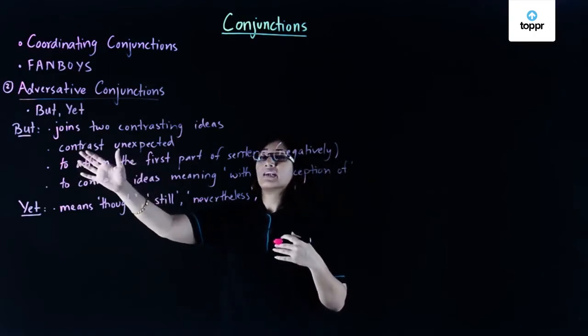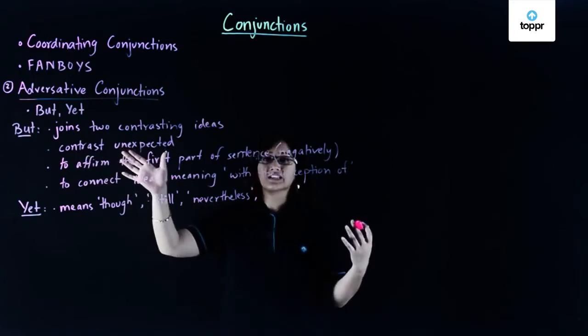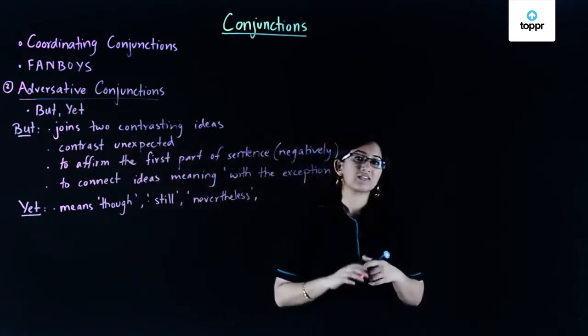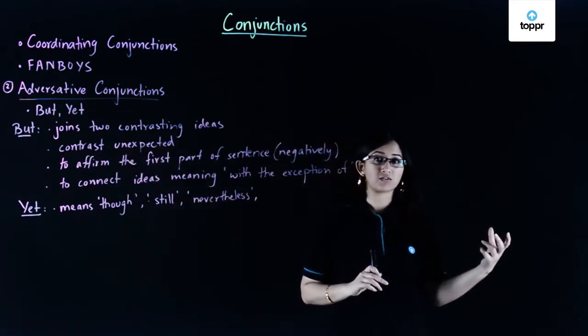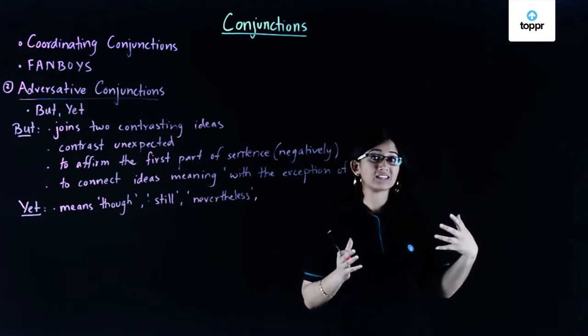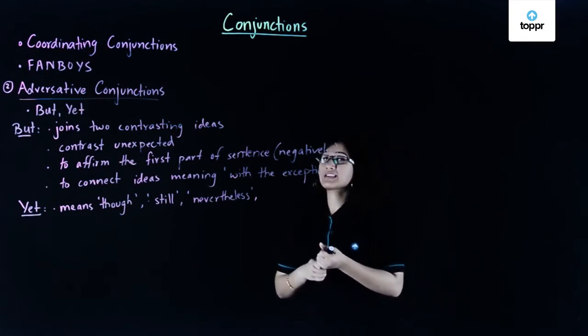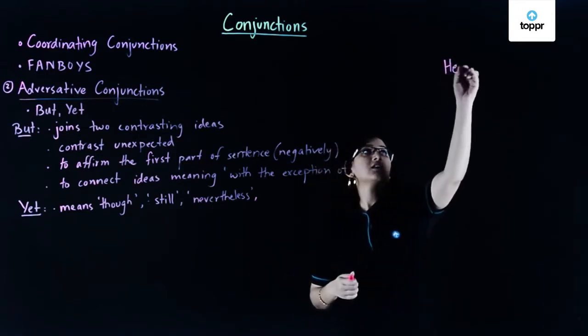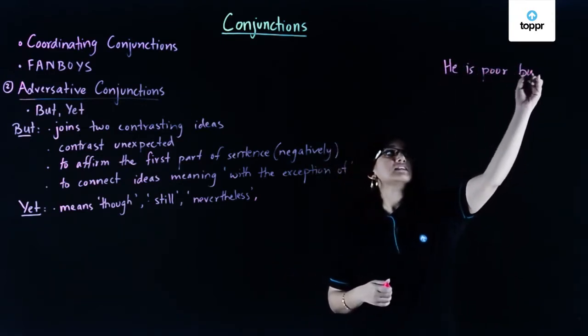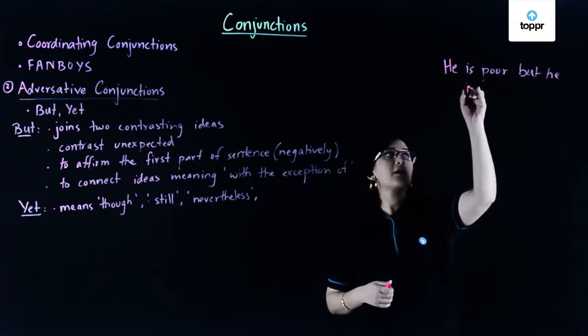So number one, we use it when contrast is unexpected. This means that whatever is in the next part of the statement is surprising according to the first part of the statement. Let's look at an example: He is poor but he is happy.